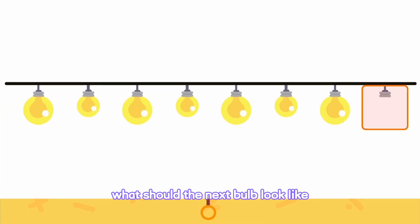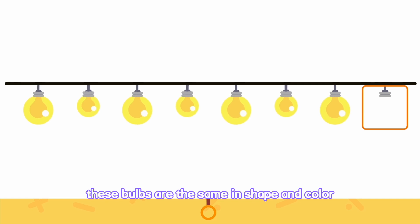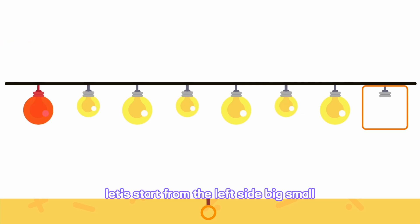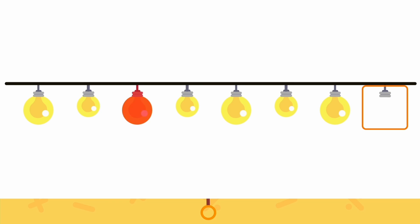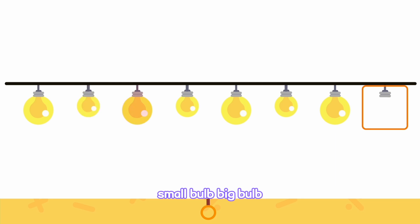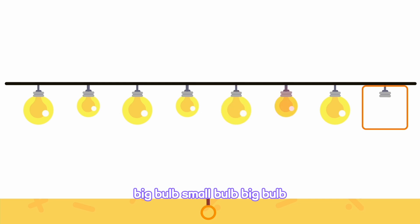So, what should the next bulb look like? Let's take a look. These bulbs are the same in shape and color, but different in size. Starting from the left side: big, small, big, small, big, small, big. These bulbs are placed in a repeating pattern of big bulb, small bulb, big bulb, small bulb.